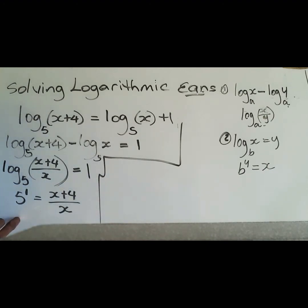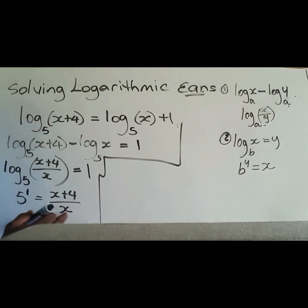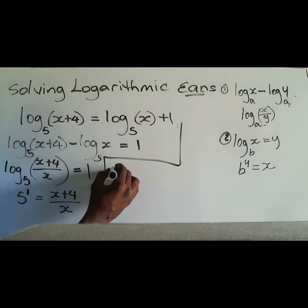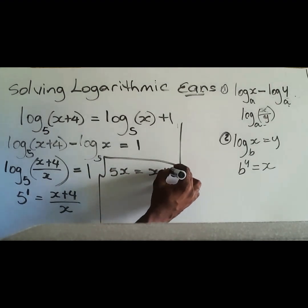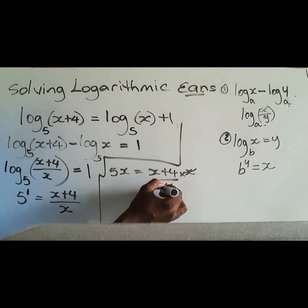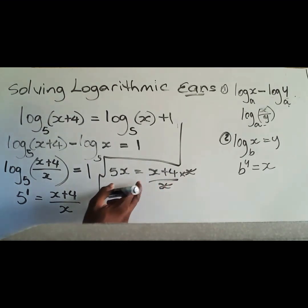All right, so as you could see what we could do now is to multiply x, so we'd have 5x which is now equal to x plus 4 over x times x, but this would cancel.